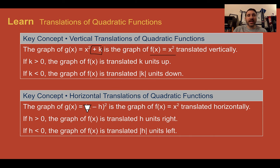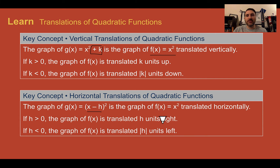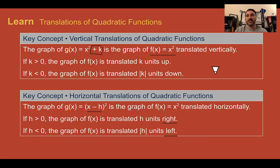Horizontal translations are shown inside the parentheses near x, and those are the opposite of what they appear, just like in exponentials. So if we see minus h, we're thinking minus usually means going to the left — well, it's the opposite, going to the right. If we see plus a number inside the parentheses, then it's going to be the opposite: instead of moving in the positive direction, it's going to move left, in the negative direction. So with horizontal translations, it's going to move the opposite of what we see.